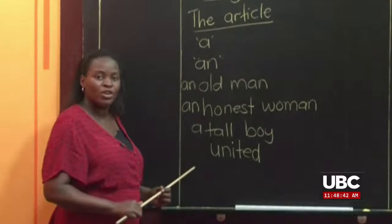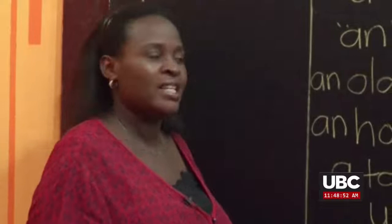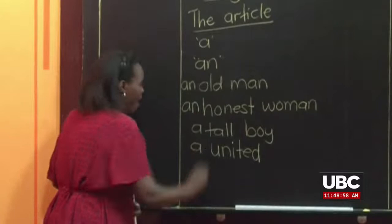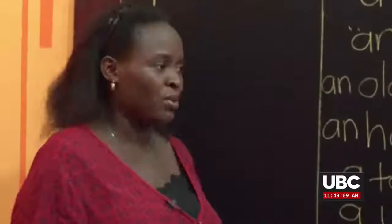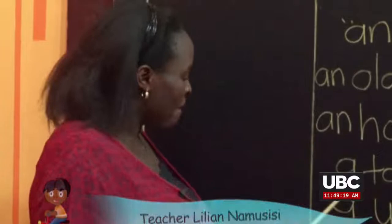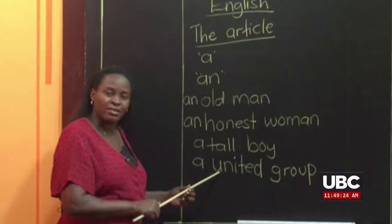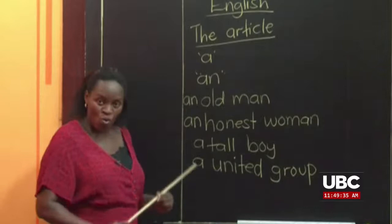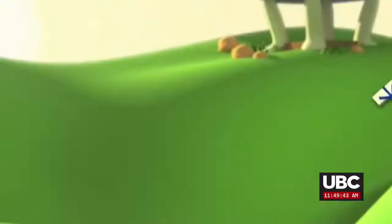We can also get 'a united group of people' or 'a united group of students'. This word 'united' begins with a vowel letter, but when you are reading it the sound is not a vowel sound — it is a consonant sound. So you say 'a united group'. With these few examples, children, you will be able to get more examples. 'Tall' begins with a consonant and sounds like a consonant, so you say 'a tall boy'. 'United' begins with a vowel letter but sounds like a consonant, so you say 'a united group'.